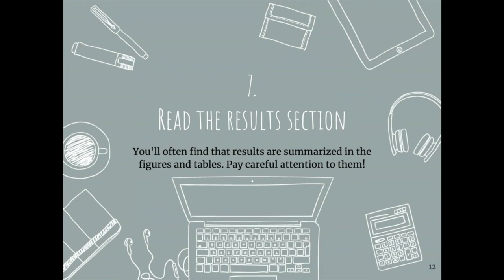Step seven: read the results section. You'll often find that results are summarized in figures or tables. Look at all those figures and tables, pay careful attention to them, and analyze whether they align with the text of the paper. They usually do, but they don't always — and that discrepancy could be something worth noting.